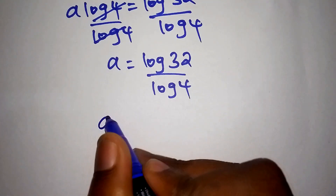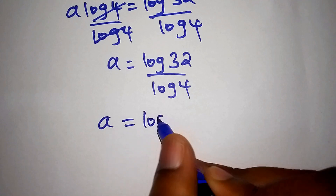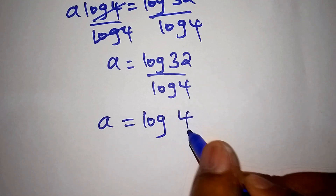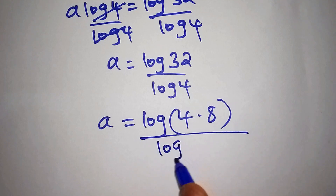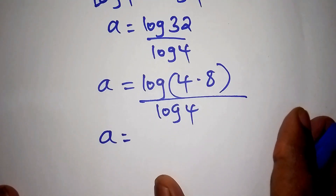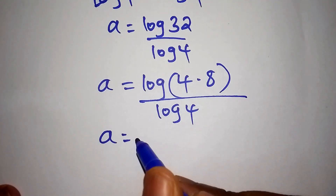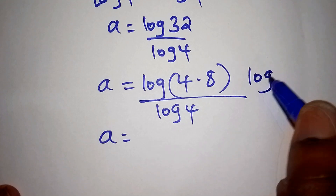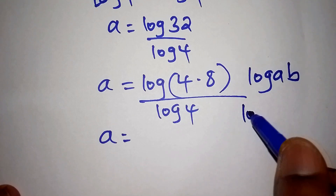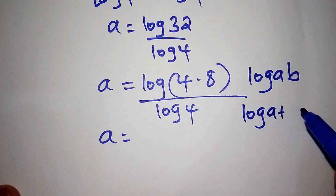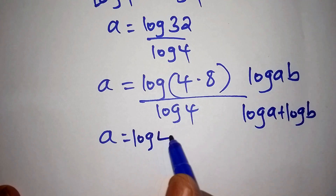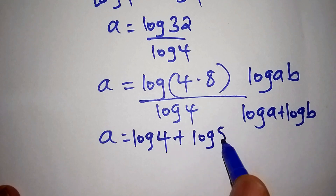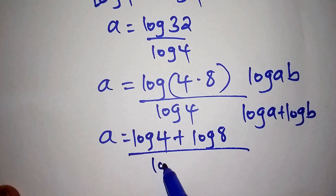The log of 32 can be written as the log of 4 multiplied by 8, all over the log of 4. Now, assuming we have the log of a multiplied by b, we can write it as log a plus the log of b. So we shall now have the log of 4 plus the log of 8, all over the log of 4.